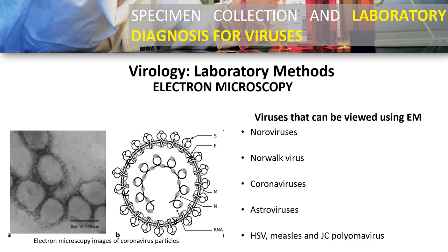Examples of viruses that can be viewed using electron microscopy include noroviruses, coronaviruses, astroviruses, herpes simplex viruses, measles, and JC polyomavirus. You can observe spike proteins — for example, this is the spike protein of coronavirus under the electron microscope. Although coronaviruses can now be cultivated in culture media, we cannot observe the virus structure in cell culture; however, we can observe the cytopathic effect.